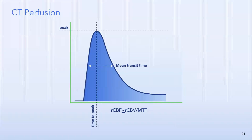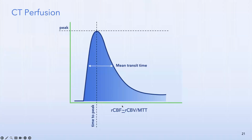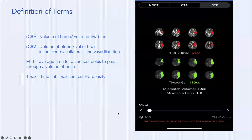On its simplest level, CT perfusion works like this: you inject contrast, it rises to a maximum peak then washes out. The area under the curve is approximately equal to cerebral blood volume (CBV). Taking the curve at half its width gives the mean transit time (MTT). Dividing CBV by MTT gives you approximately cerebral blood flow (CBF).